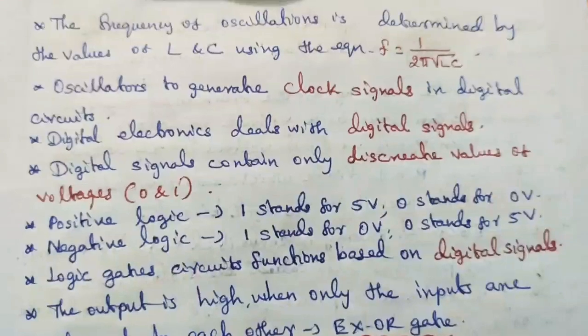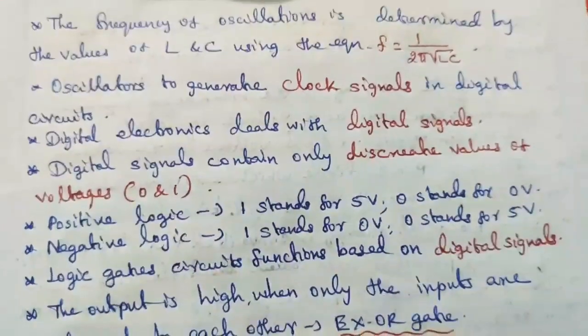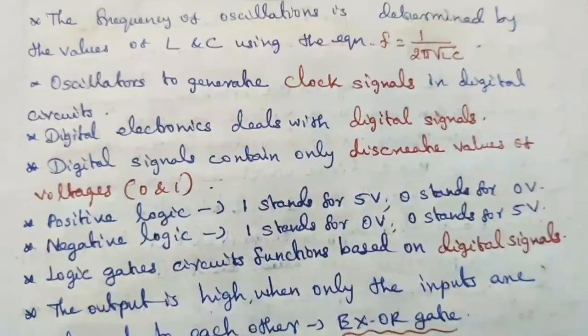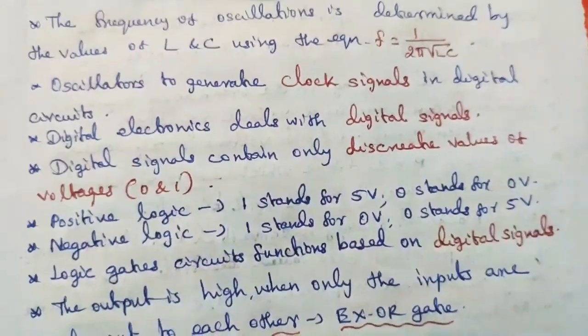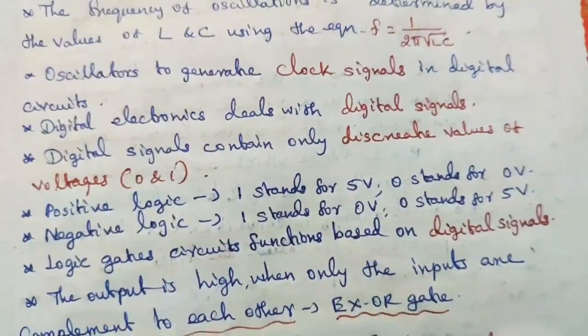The frequency of oscillations is determined by the values of L and C using the equation F equals 1 by 2 pi root LC. Oscillators generate clock signals in digital circuits.